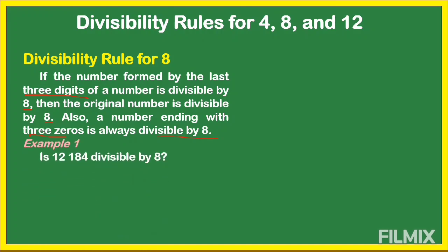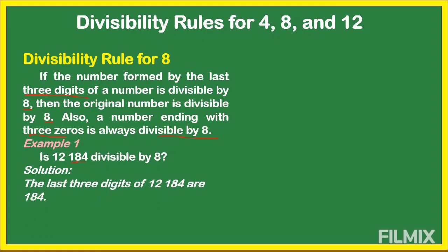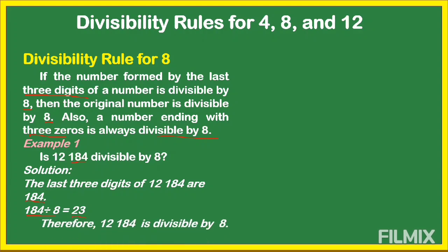For example, is 12,184 divisible by 8? The last three digits of 12,184 are 1, 8, 4. So we're going to divide 184 by 8, and the answer is equal to 23. Therefore, 12,184 is divisible by 8.